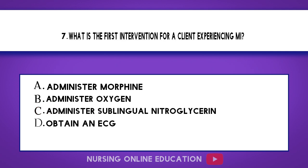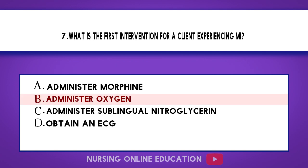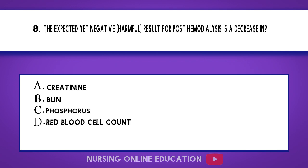Question 7. What is the first intervention for a client experiencing an AMI? A. Administer morphine. B. Administer oxygen. C. Administer sublingual nitroglycerin. D. Obtain an ECG. The answer is option B: Administer oxygen.